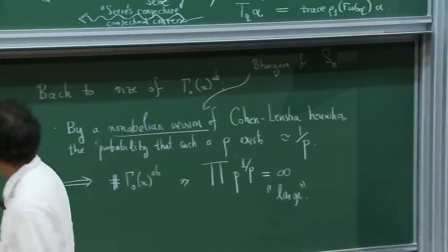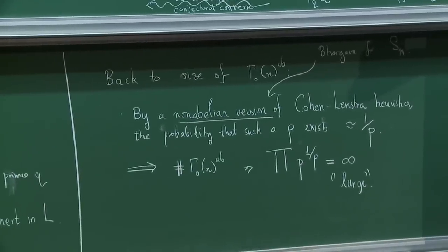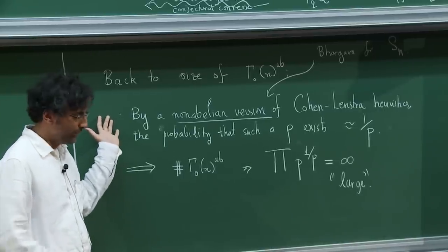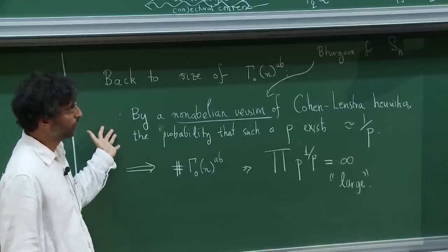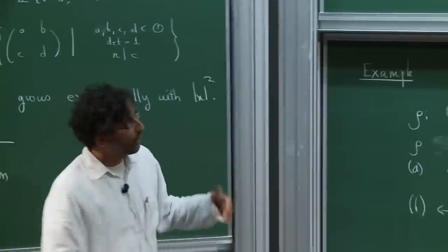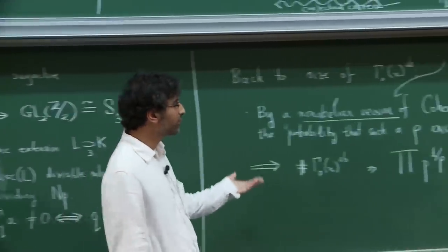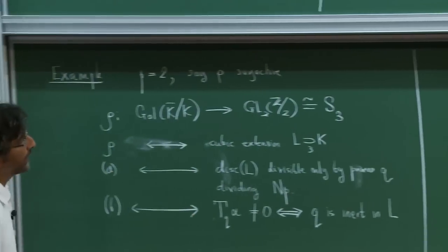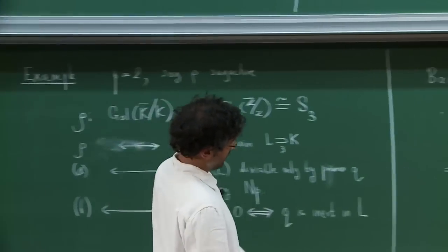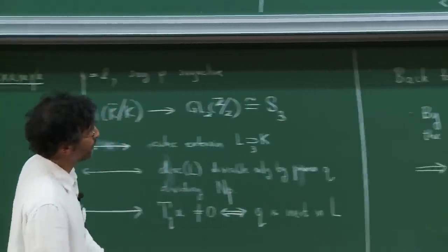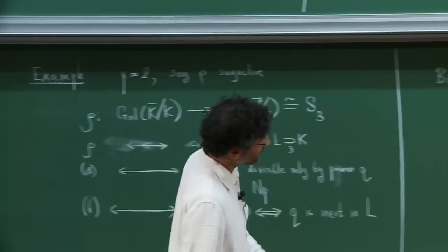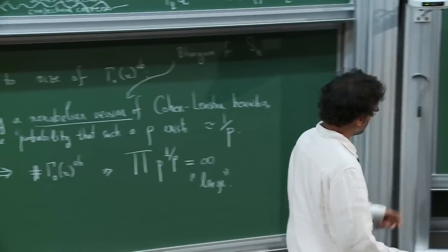One advantage of this type of heuristic is it works very well when you replace SL2 by a bigger group or replace the imaginary quadratic field by another field. This always gives an answer, and that answer seems — as far as people have been able to test it — to be experimentally correct so far. That's the main virtue of this heuristic: it's much more generally applicable than the previous one. That's the end of heuristics.